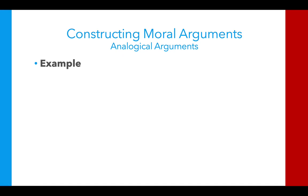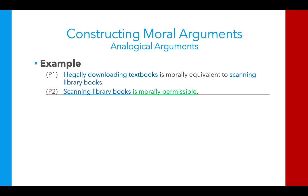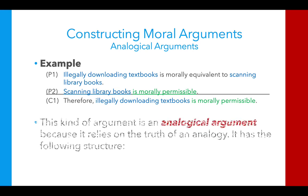We can also reorganize these premises to do the same thing but look a little different. This alternative argument starts with the moral equivalence claim as premise 1: illegally downloading textbooks is equivalent to scanning library books. Premise 2 then says: scanning library books is morally permissible. Conclusion: therefore the other act — illegally downloading textbooks — is permissible as well. It's the same kind of argument; I've just changed which premise comes first.